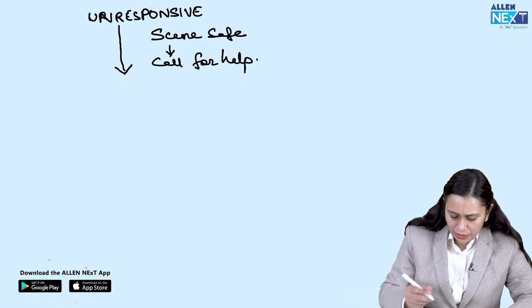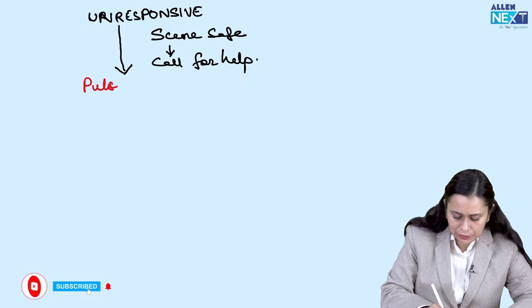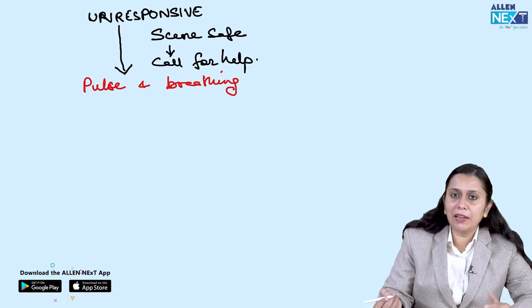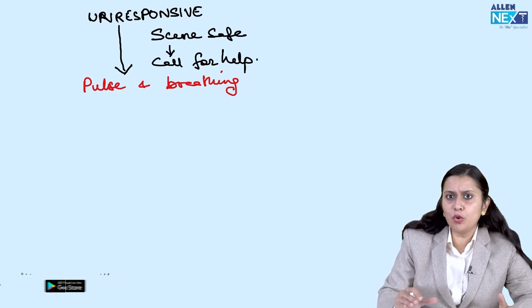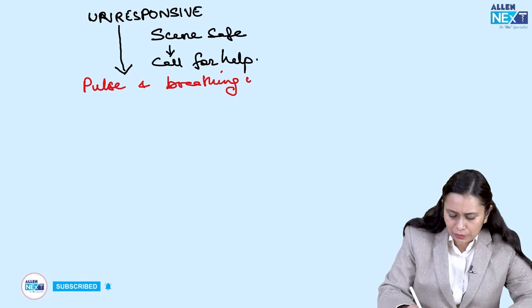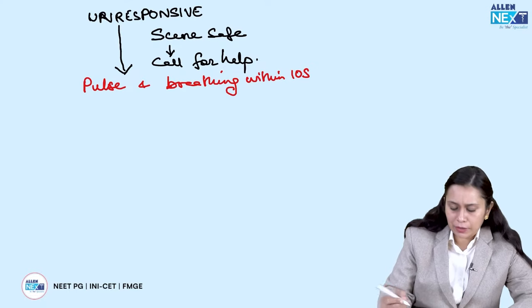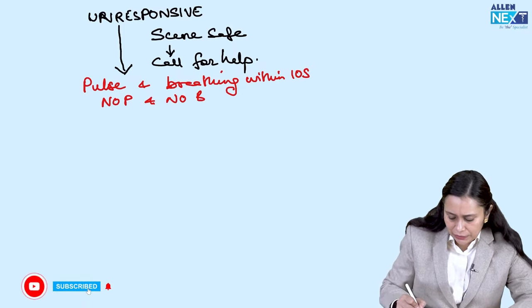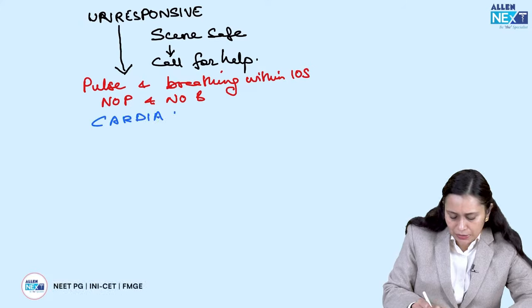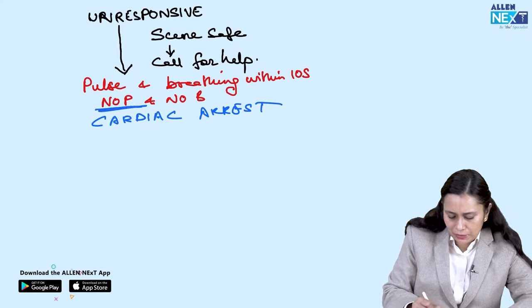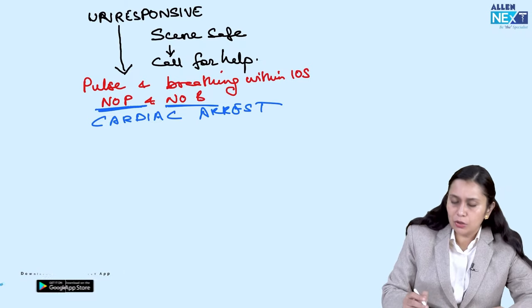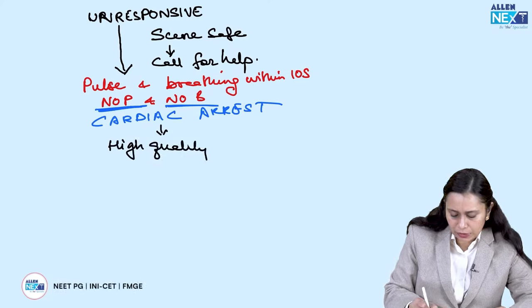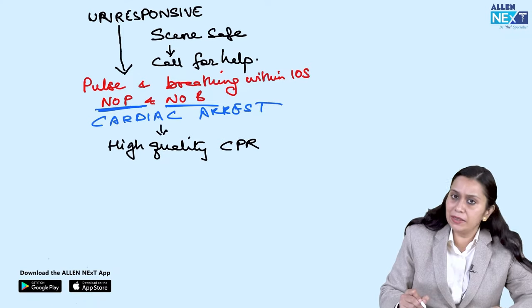After calling for help, we assess pulse and breathing. For pulse in an adult, we check the carotid. For breathing, we observe chest movement. Both assessments must be done within 10 seconds. In this question, no pulse and no breathing are found — both are absent — so the person is definitely in cardiac arrest. Whenever anyone is in cardiac arrest, the first thing we do is start high quality CPR.